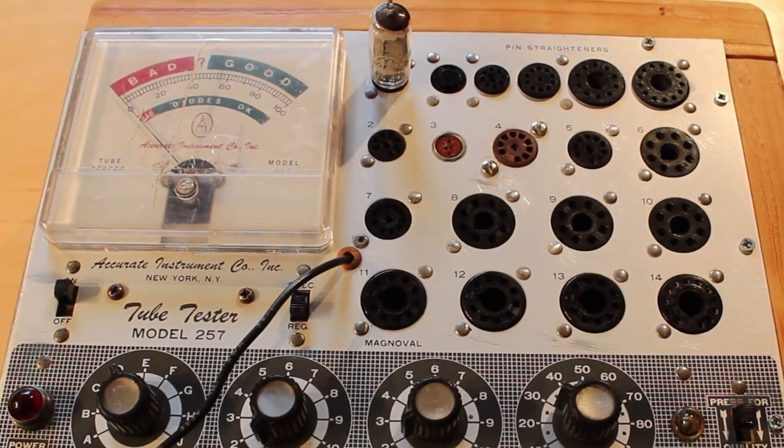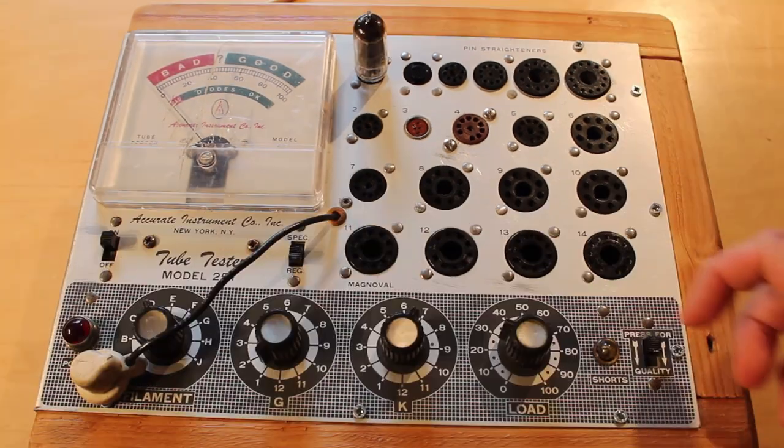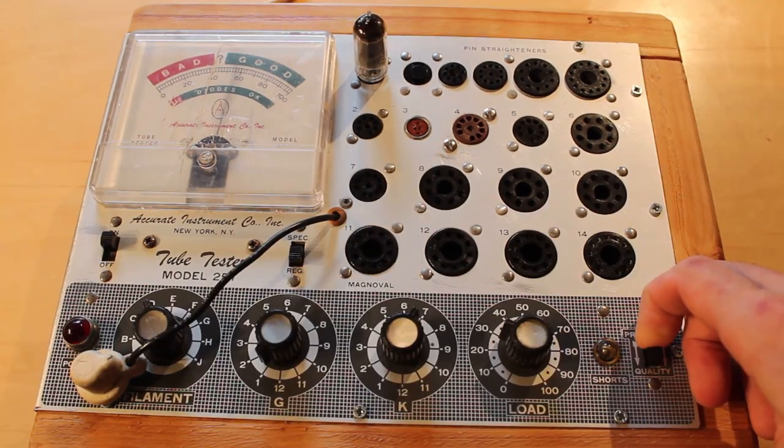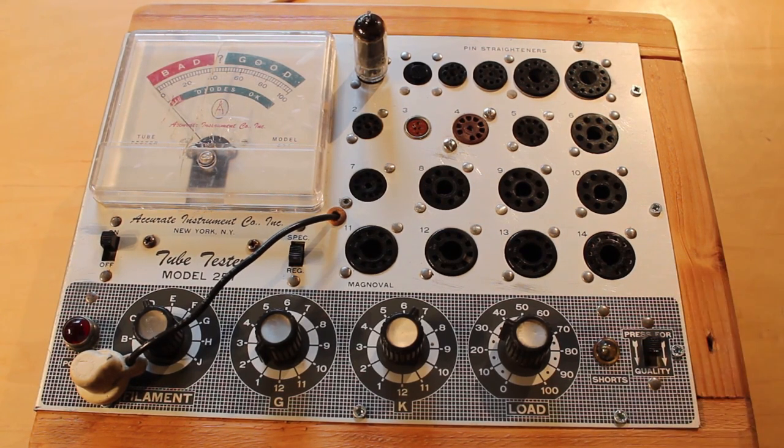The 2D21 is the same as well. It also tests bad. Now for reference this is a good 6AU6 just to show what the tester looks like whenever it's testing a tube that actually functions.